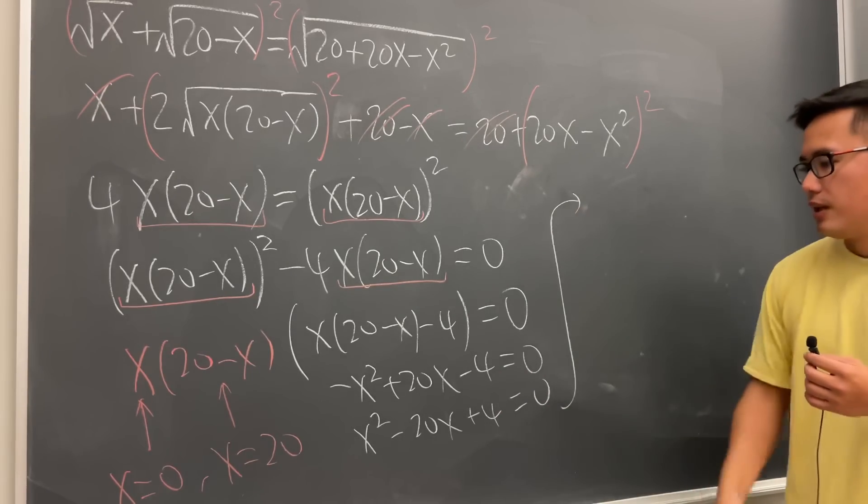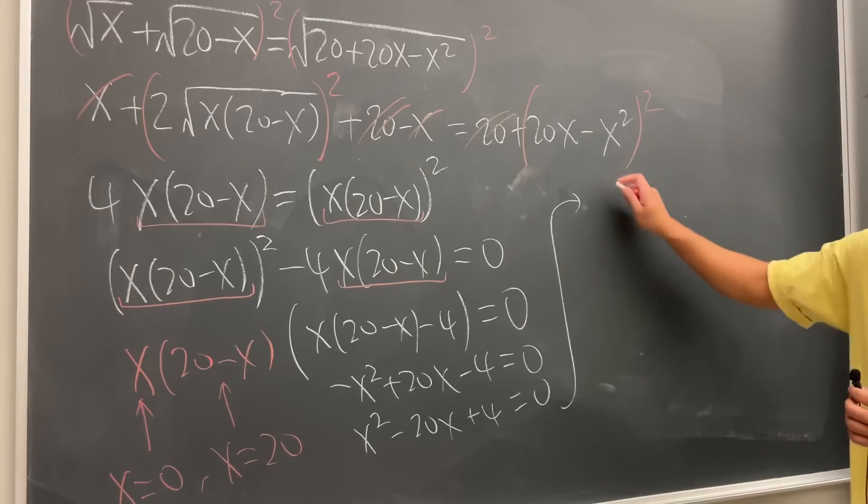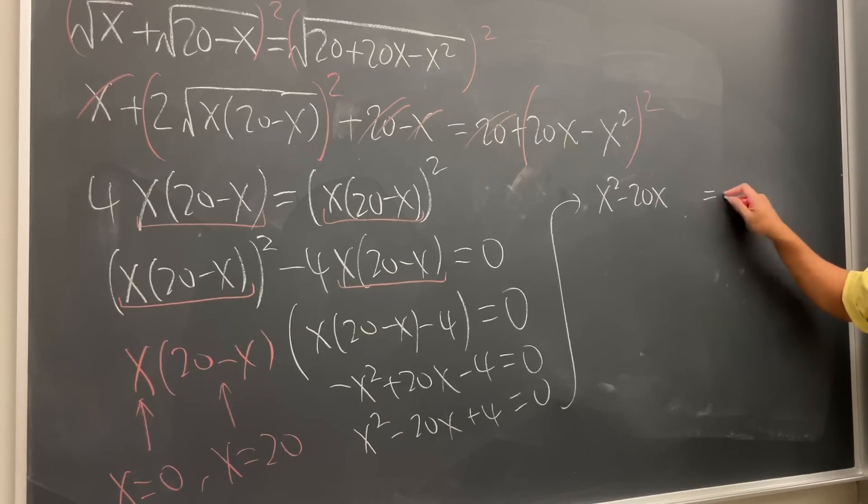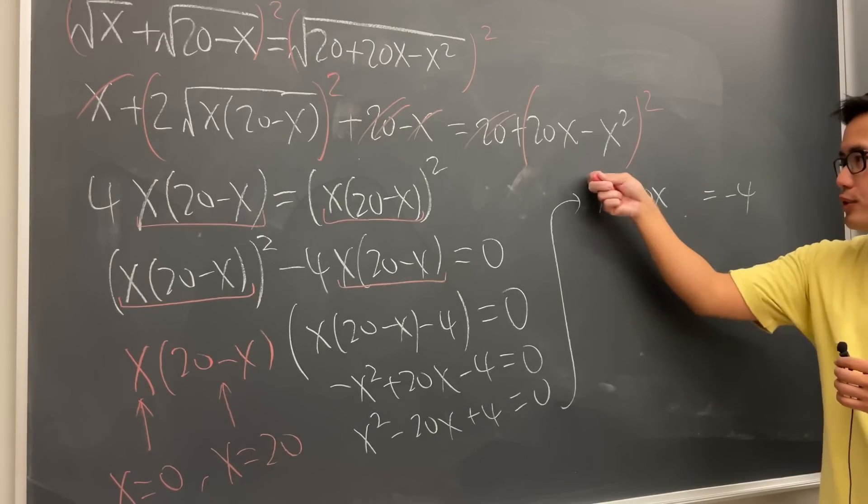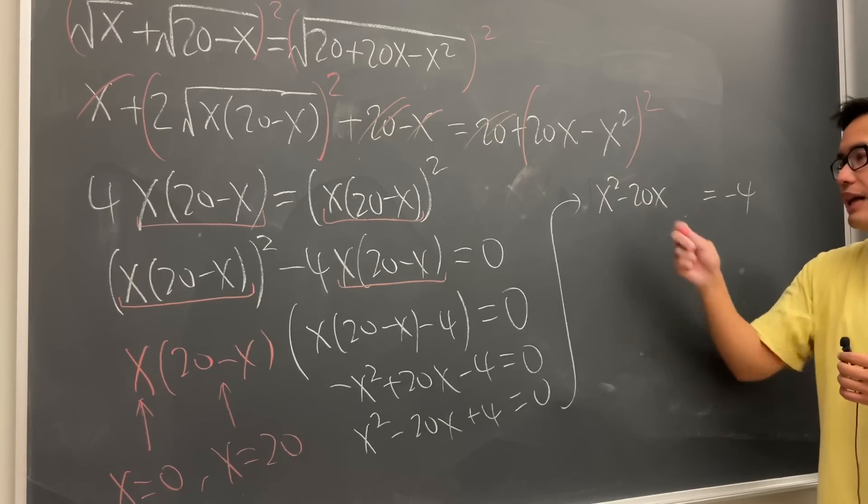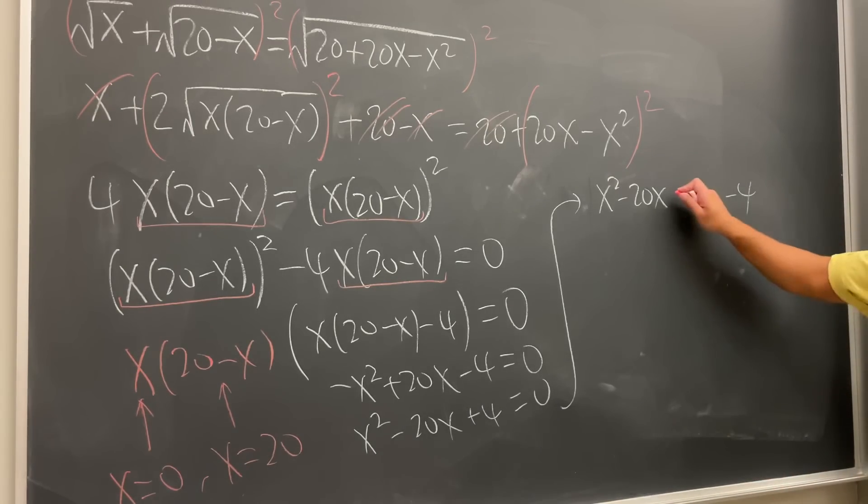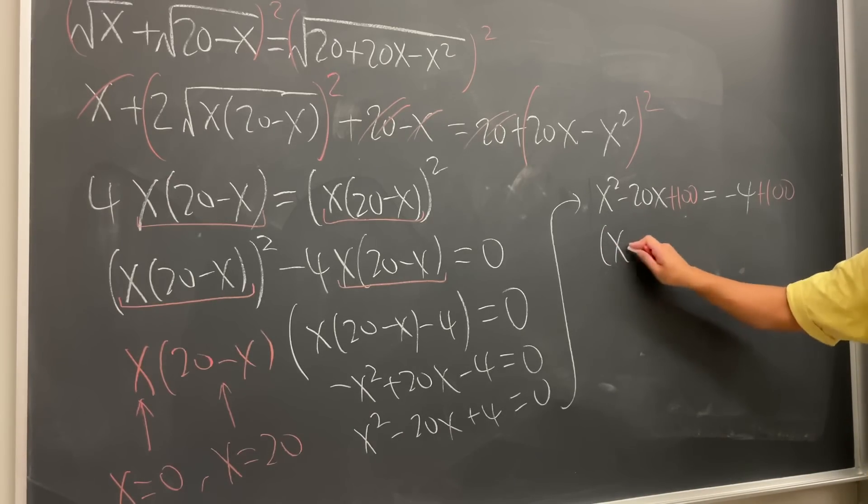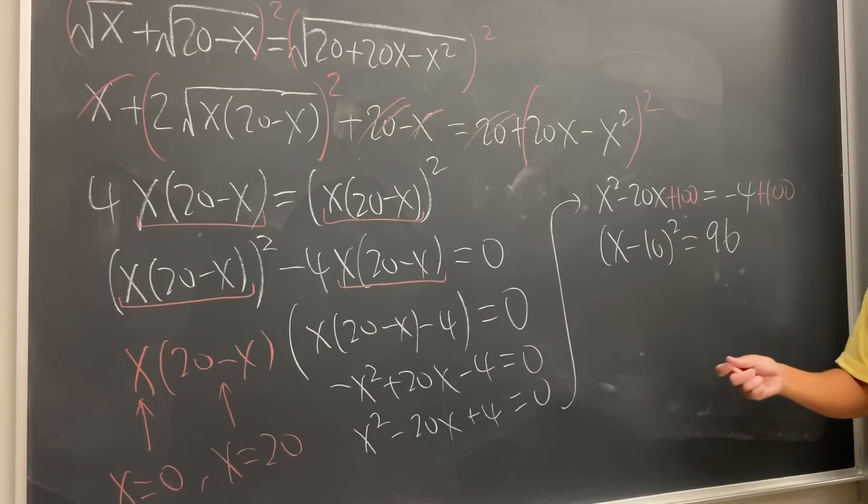And let's just use the completing square. Move this 4 to the other side. So we have x squared minus 20x equals negative 4. For this number, let's go ahead, make sure this is 1. It is 1. Take half of that is negative 10. Square that is 100. So I will add 100 here and I will also add 100 here. This gives us x minus 10 squared, and that's 96. Completing a square.